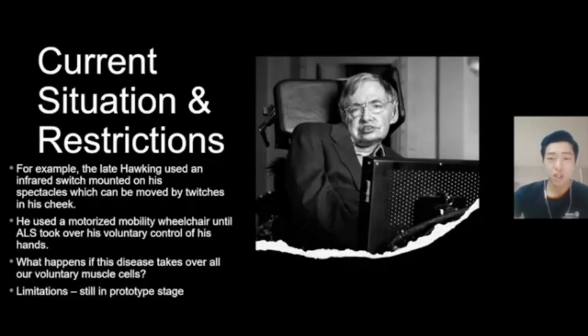So the current situation, if I may use our late Stephen Hawking, he used an infrared switch mounted on his spectacles which can be moved by twitches in his cheek. He used a motorized mobility wheelchair until the ALS took over his voluntary control of his hands. So what happens if this disease takes over all our voluntary muscle cells?